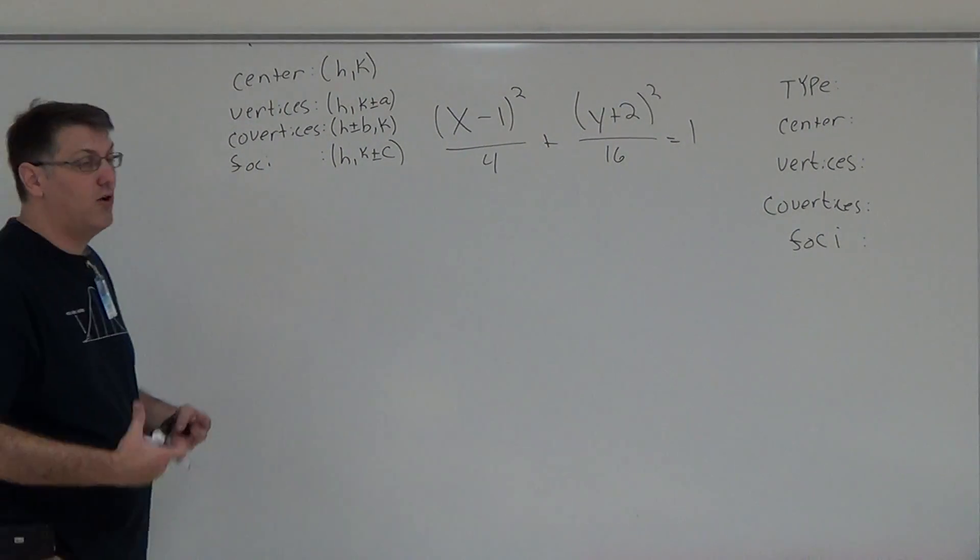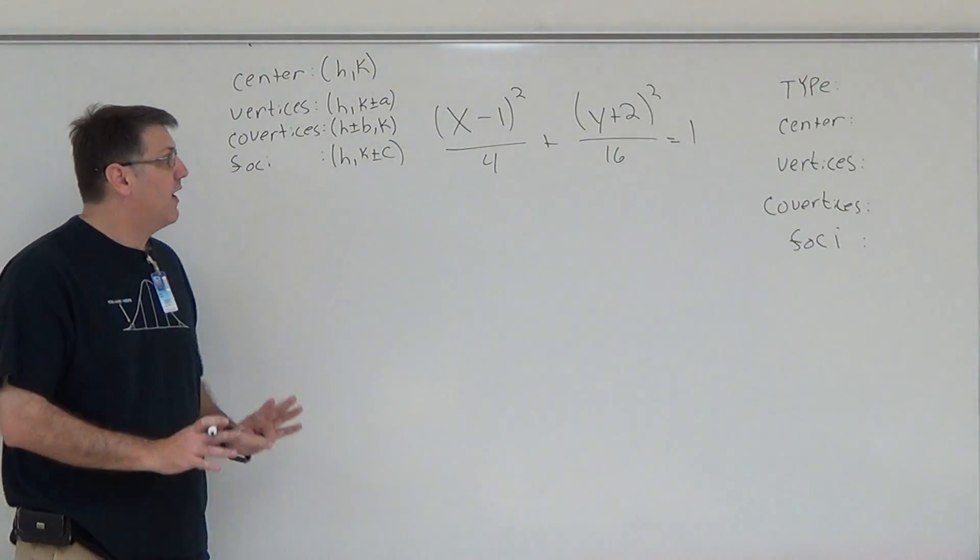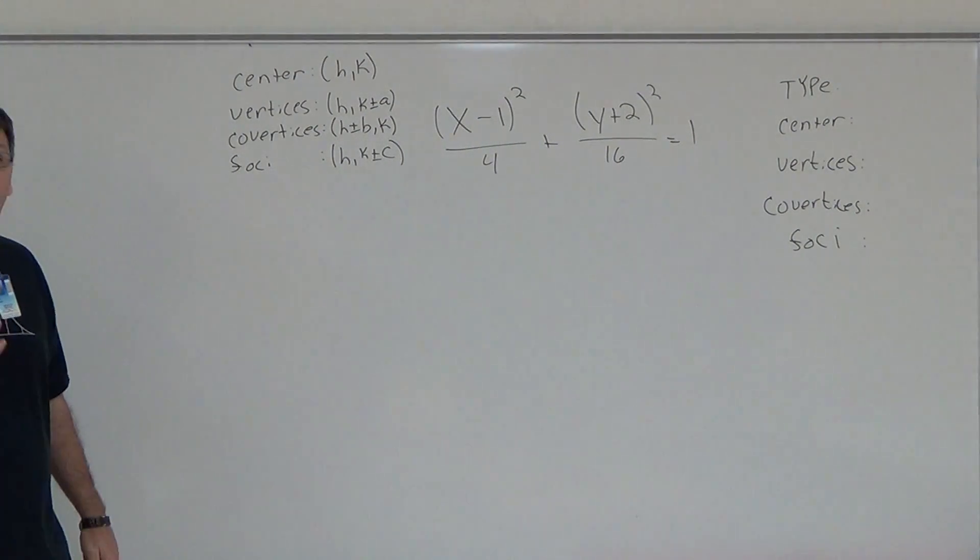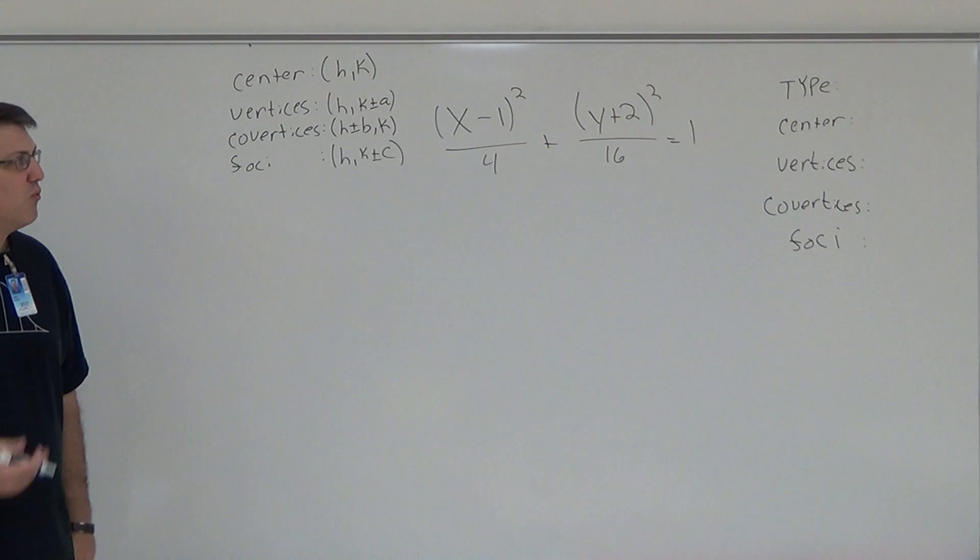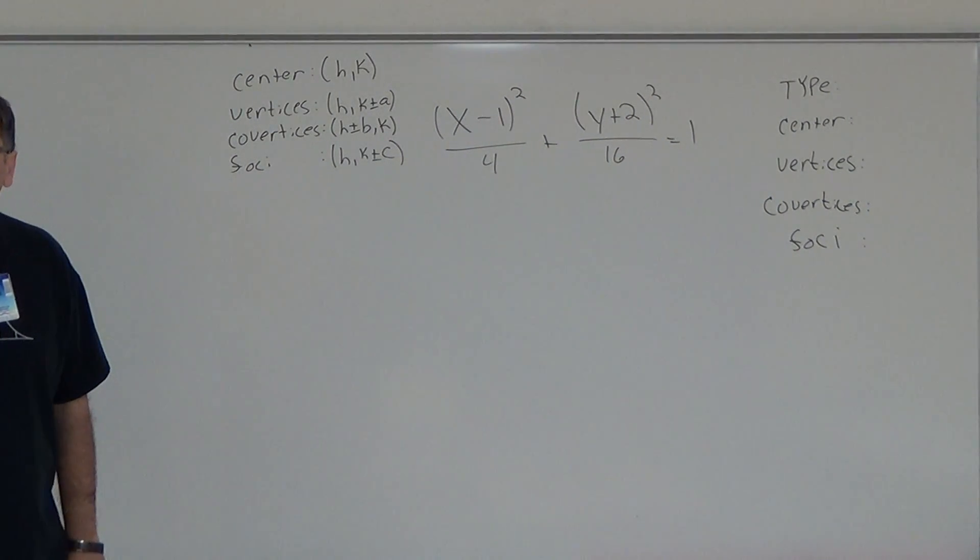All right, so in the last video I broke down what an ellipse was and the different parts of an ellipse. Now we're actually going to work with the standard form of an ellipse, and we're going to be able to identify the type of ellipse it is, whether it's horizontal or vertical, what the center is, what the vertices are, what the co-vertices are, and what the foci is.